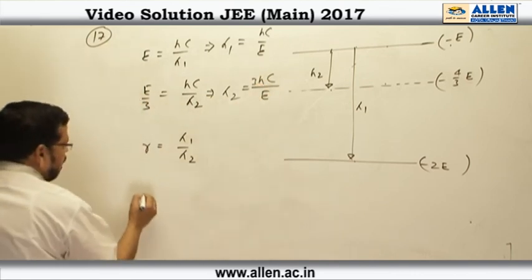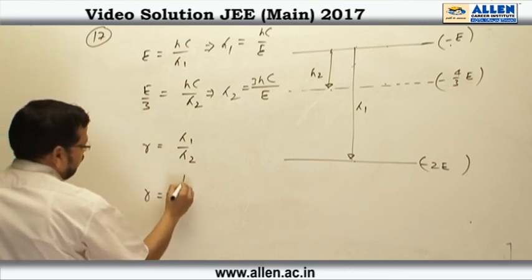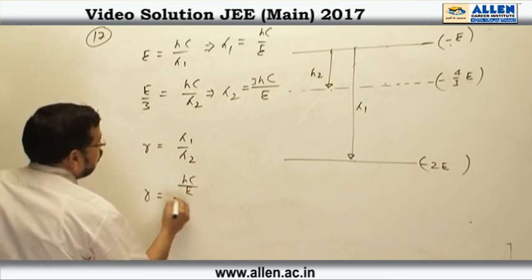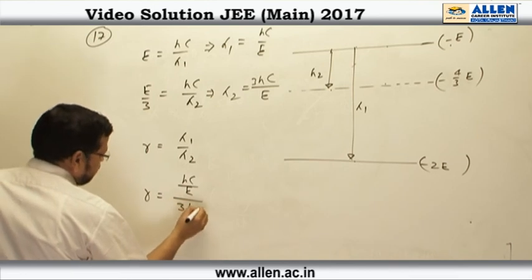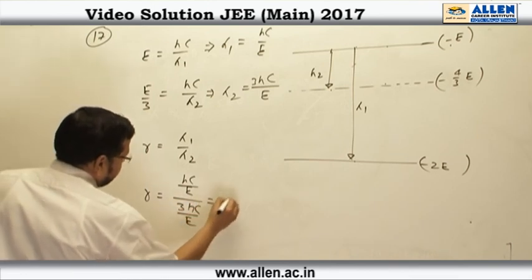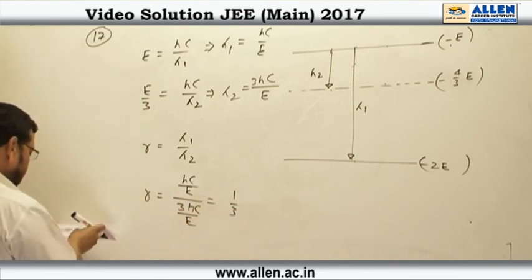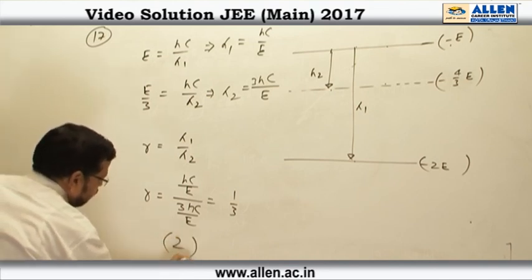So, r is going to be lambda 1 h c over e over 3 h c over e. So, it is going to be 1 by 3. So, correct answer is going to be answer number 2. Thank you.